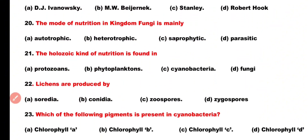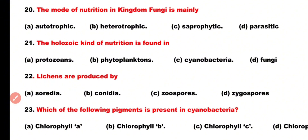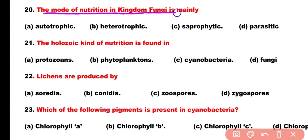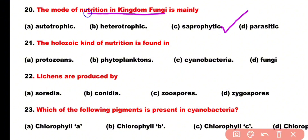Question number 20: Mode of nutrition in kingdom Fungi is mainly: autotrophic, heterotrophic, saprophytic, or parasitic. Correct answer is option C. In kingdom Fungi, the mode of nutrition is saprophytic, meaning they obtain food by absorption.